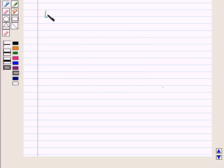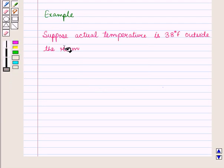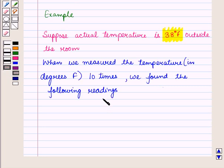Now let us see one example to find accuracy and precision. Suppose actual temperature is 38 degrees Fahrenheit outside the room.